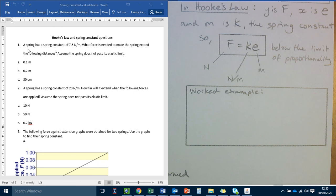So question one has got that a spring has a spring constant of 7.5 newton meters. What forces needed to make the spring extend the following distances? And we're just going to do one A, 0.1. And it says assume the spring does not pass this elastic limit. So that's brilliant. We know we can use F equals KE because it's below the elastic limit.